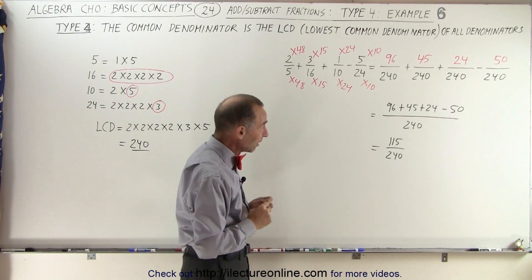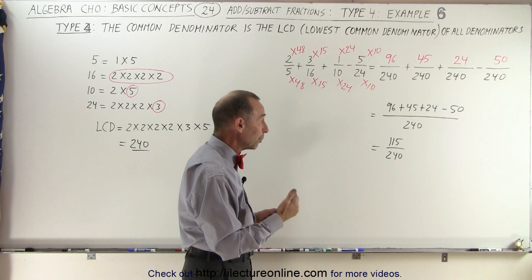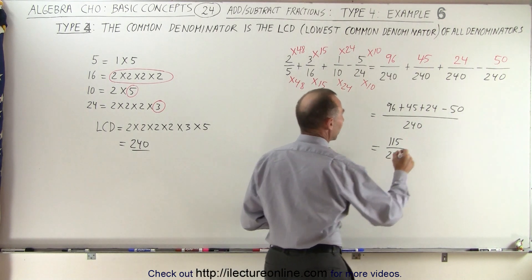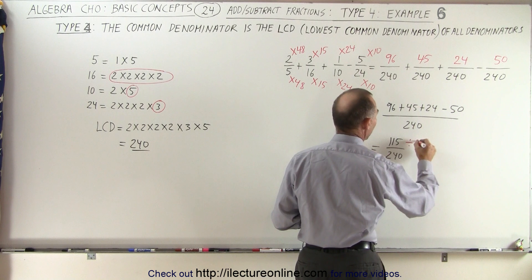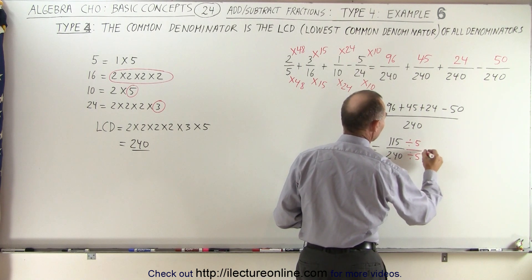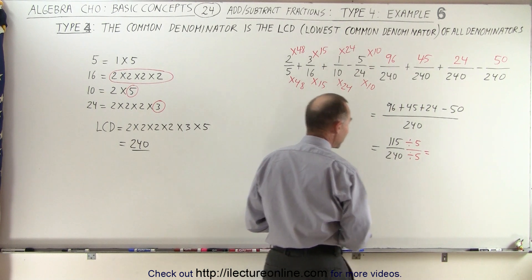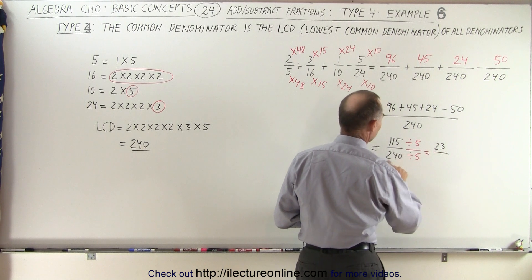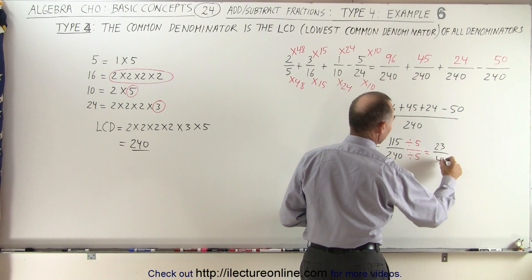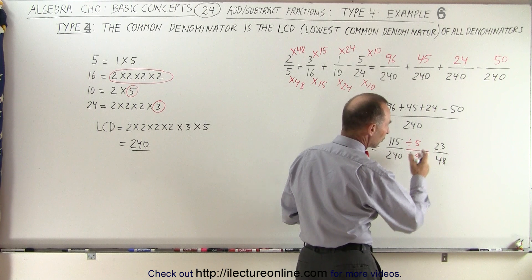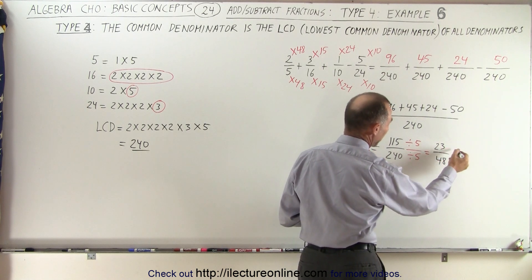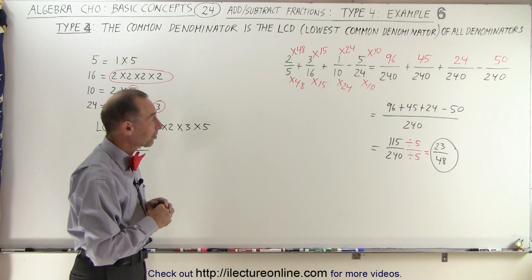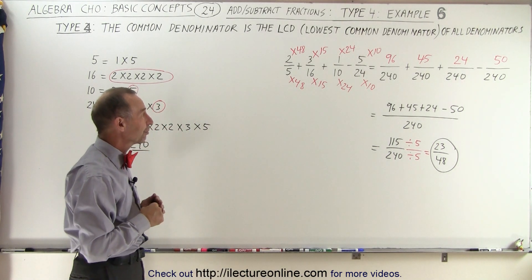The numerator ends in 5 and the denominator ends in 0, which means both are divisible by 5. So let's divide the numerator by 5 and the denominator by 5. 115 divided by 5 is 23, and 240 divided by 5 is 48. Can we reduce further? Since 23 is a prime number, we cannot. So 23 over 48 is the fraction in its lowest form, and that is the final answer.